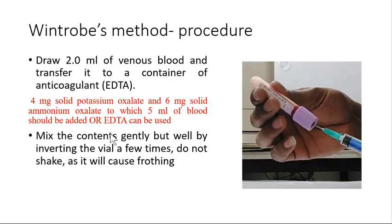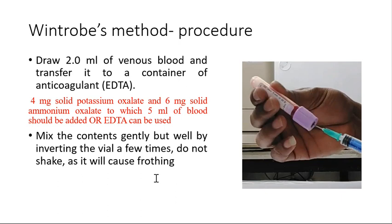Now let's see the procedure for the Wintrobe method. In both methods, you take blood and mix it with the appropriate anticoagulant. For the Wintrobe method, either take 2 ml blood in an EDTA vial, or use a powder of potassium oxalate and ammonium oxalate added to 5 ml of blood. Mix the contents gently by inverting the vial a few times — do not shake vigorously as this can cause frothing.